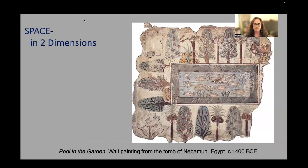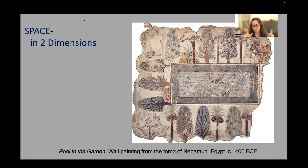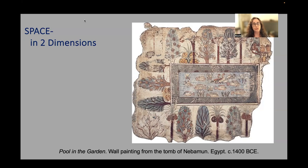Space in two dimensions: rather than moving around or through it as with sculpture or architecture, with drawing and painting we see the surface all at once. In drawings, prints, photographs, and paintings, the actual space of the picture surface — the picture plane — is defined by its edges, usually the two dimensions of height and width. Paintings and drawings have traditionally been done on rectangular surfaces like paper, canvas, or wood panel, though we'll see exceptions as we move toward the 20th and 21st centuries. Within these boundaries there are many possibilities for handling pictorial space.